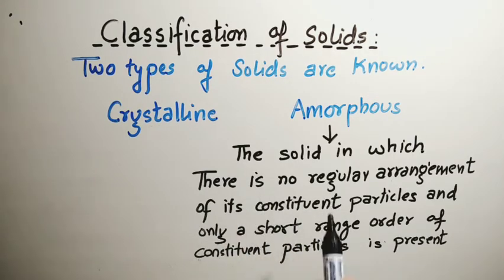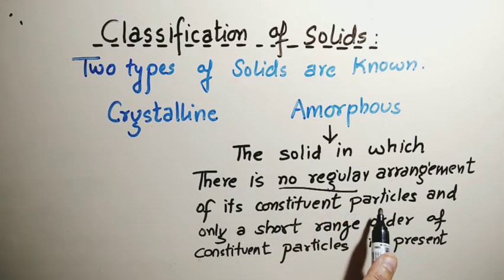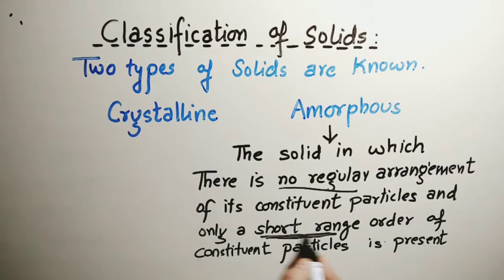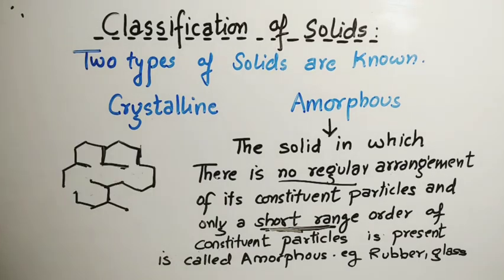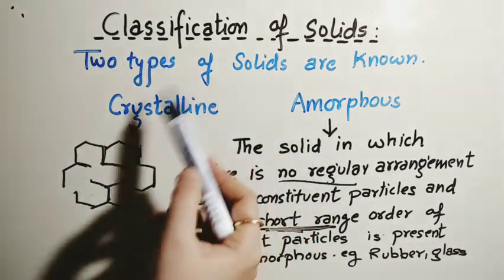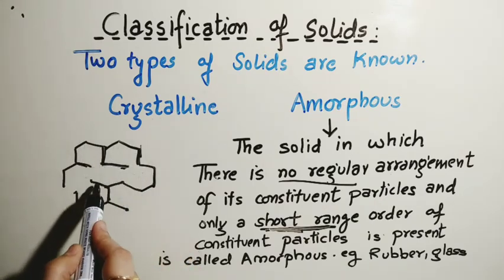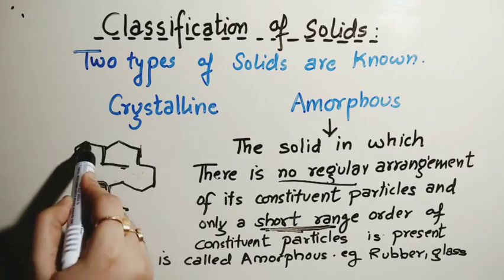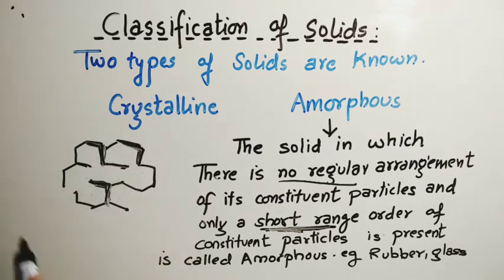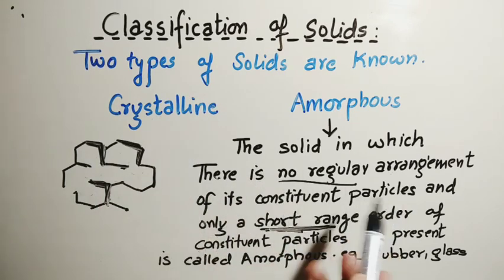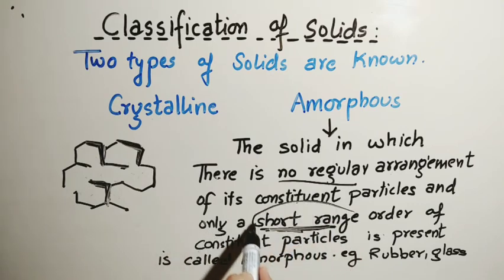Amorphous solids are those in which there is no regular arrangement of constituent particles and only short range order is present — unlike crystalline solids where long range order was also there. They are known as amorphous solids. For example, rubber and glass. In the case of amorphous structure, there is some short range pattern but no long range order is present.